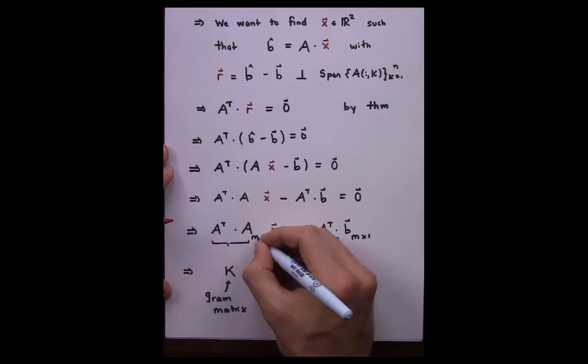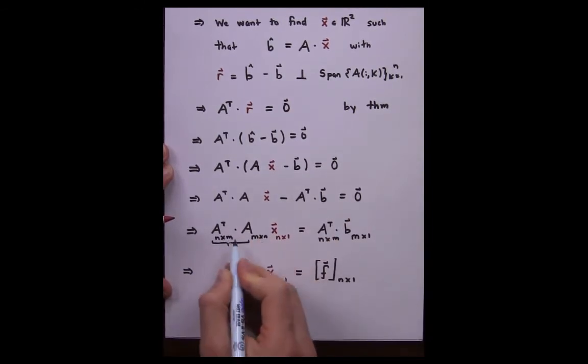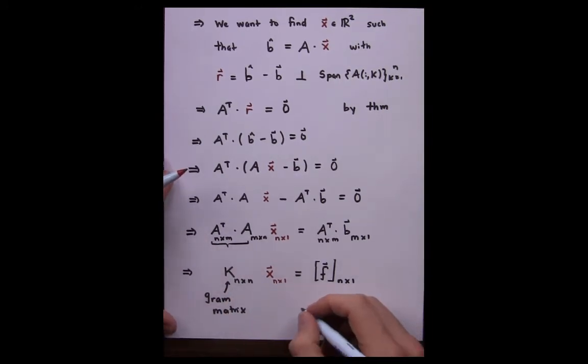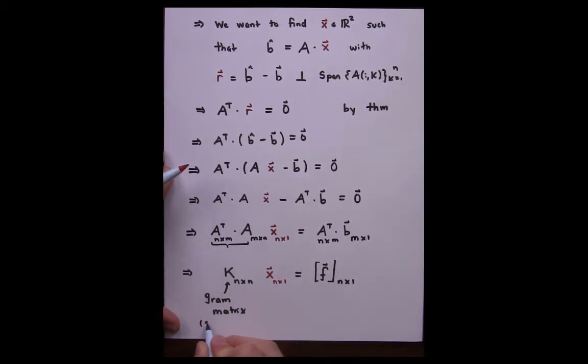In this specific problem, N is 2. A is M by N. A transpose is N by M, which means the Gram matrix is an N by N matrix. This is square, which is exciting, because we've studied square matrices.